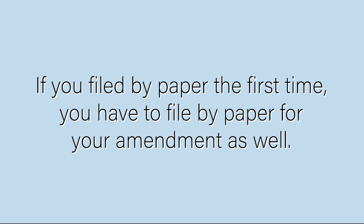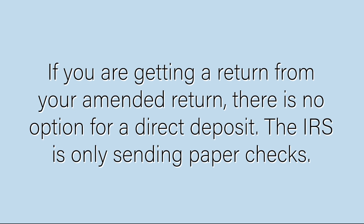Number four: as of right now, the only years you can electronically amend are 2019, 2020, and 2021. The rest have to be amended on paper — that's just the way it is with the IRS. Lastly, a lot of people were saying they're not able to get a direct deposit for the amended return. Unfortunately, the IRS is not allowing this — they will send you a paper check. If you're getting more money back on the second return, you cannot get that amended tax return refund through direct deposit. You're going to be getting it via check. That's just the way the IRS has done it and is still doing it right now in 2022 for 2021.